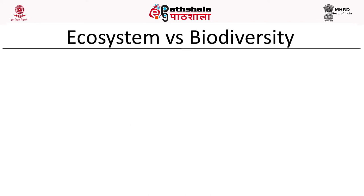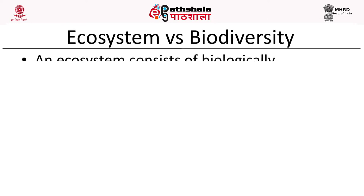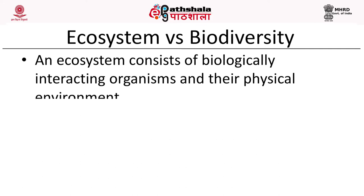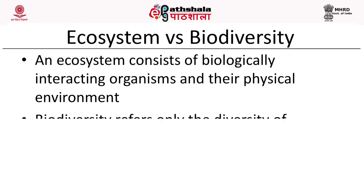What is the difference between ecosystem and biodiversity? An ecosystem consists of the biologically interacting organisms as well as the physical environment. That physical environment attribute is missing in the case of biodiversity. Biodiversity deals only with the diversity of organisms, especially species diversity, because the species is the basic unit of biodiversity as well as taxonomy. Biodiversity rather skewly looks at species-level diversity.